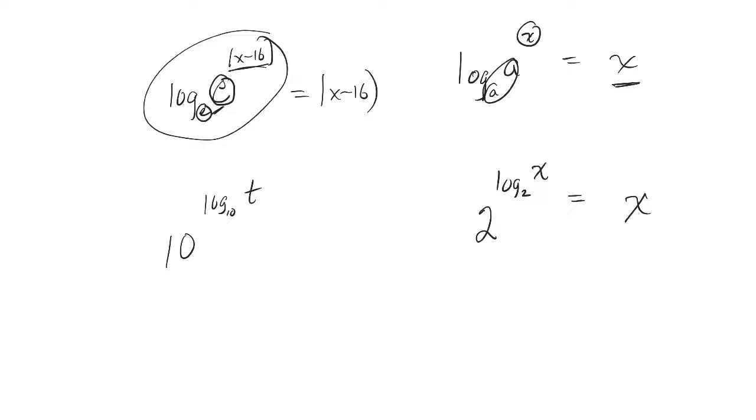Same thing here if you do it opposite. So if you have a base 10, and your exponent is log base 10, if this matches with this, then the answer to that is just whatever t is. If this and this match, your answer is just that.